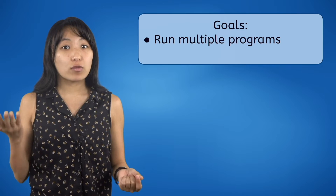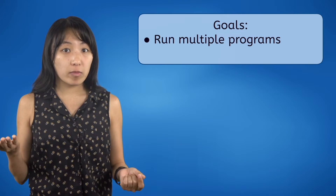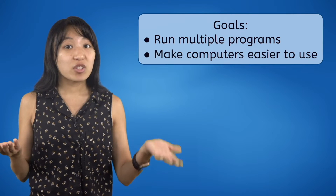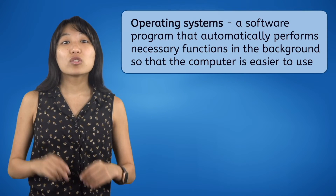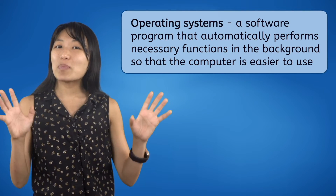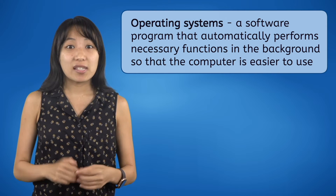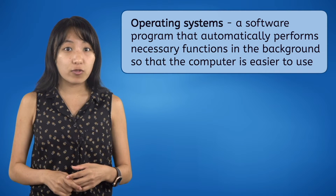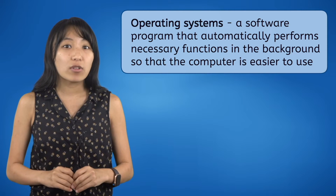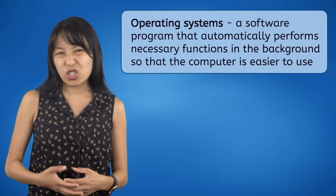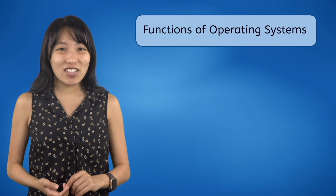The problem that programmers had to solve was twofold: they had to find a way to run multiple programs at once and how to make computers easier to use. The solution came in the form of operating systems — a software program that automatically performs necessary functions in the background so that the computer is easier to use.